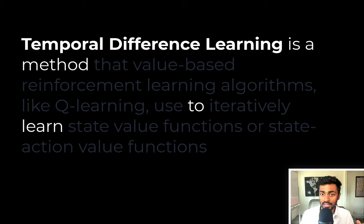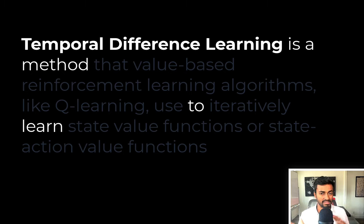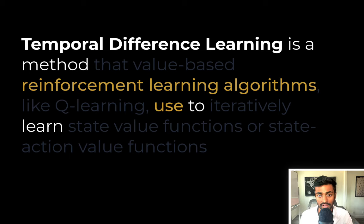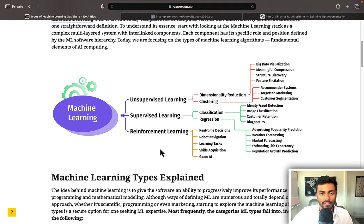Temporal difference learning is a method to learn. Now we're going to add some more complexity to it. Temporal difference learning is a method reinforcement learning algorithms use to learn. So, what are reinforcement learning algorithms? Reinforcement learning is one of the three machine learning paradigms that machines use to learn.